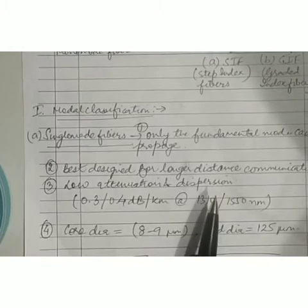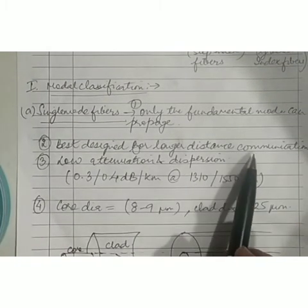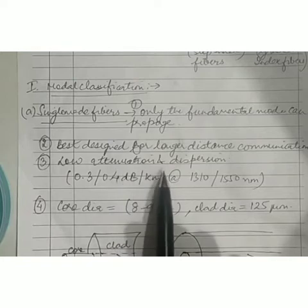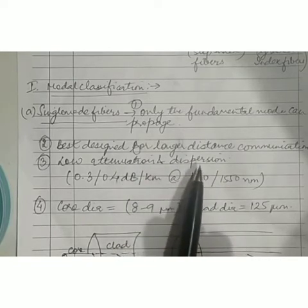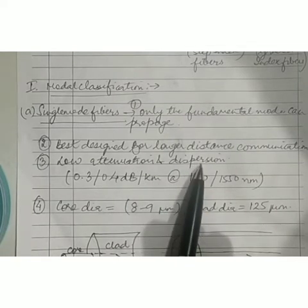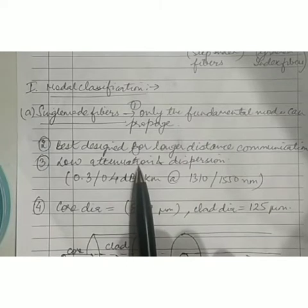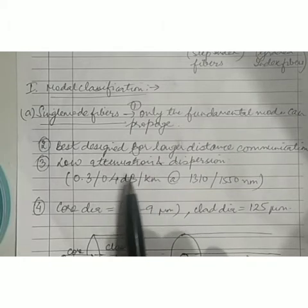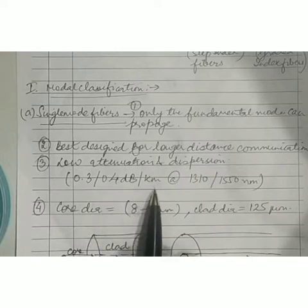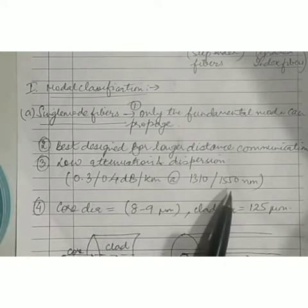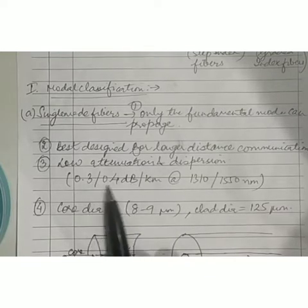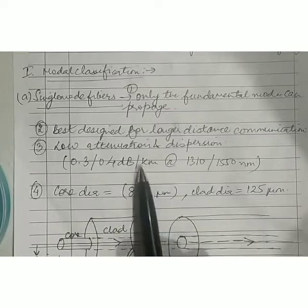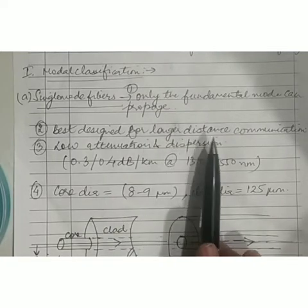Single mode fibers are basically designed for long distance communication. The reason is that in a single mode fiber, attenuation and dispersion — the two factors responsible for degradation of the signal — are very low. The attenuation in single mode optical fiber is in the range of 0.3 to 0.4 dB per kilometer at a wavelength of 1310 or 1550 nanometers, which is a reasonably low value.